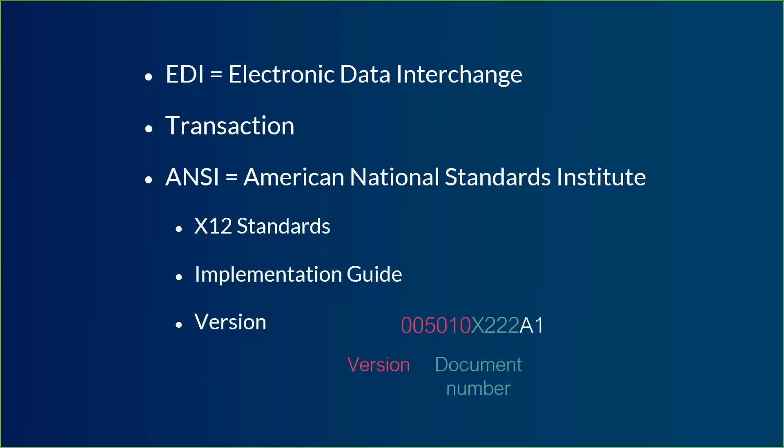The green part is a document number. Because there are lots of different types of transactions, there's a different document number for each transaction. This one happens to be the document number for a professional claim. Since each transaction has slightly different things it's trying to accomplish, the rules have to be slightly different for each one. So this document number in combination with the version tells us which set of rules the transaction is supposed to be compliant with. The last bit is the addendum or errata — after the version and document have been finalized, if there are any other updates or changes, they will publish an addendum, and including the addendum number signifies that the transaction takes that information into account.